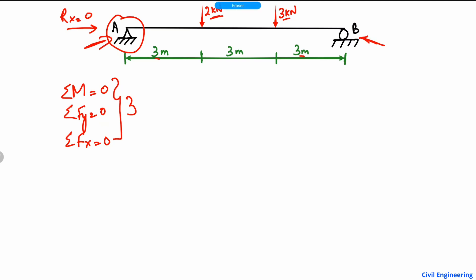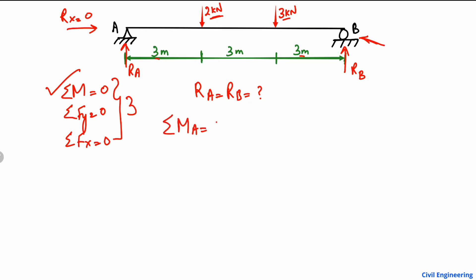To find the support reactions in the vertical direction, we have RAy at the left support and RB at the right support — these two are unknown. We start with the moment equilibrium equation: summation of moments at point A equals zero.